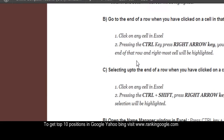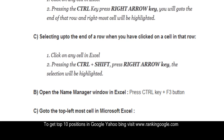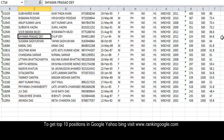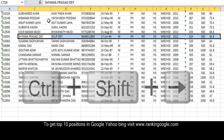Next tutorial: go to the end of a row when you have clicked on a cell in that row. I have already shown you Control+Right Arrow. Selecting up to the end of a row when you have clicked on a cell in that row — say you are here and you want to select up to this position. Press the Control key and Shift key together and press the Right Arrow, and the whole area will be selected.